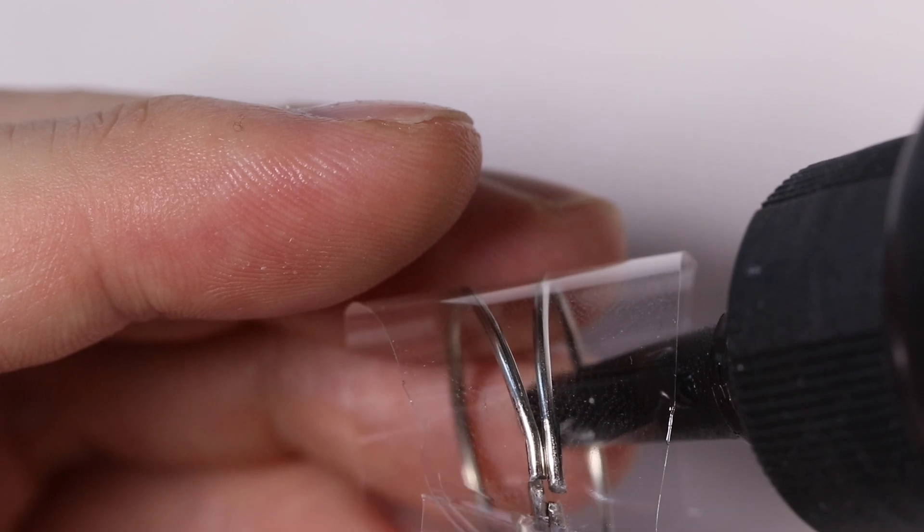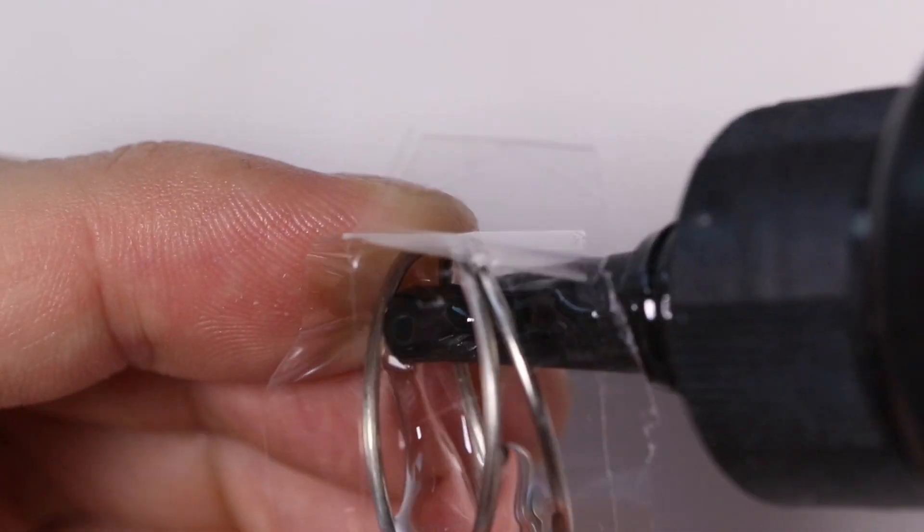So then for the next one I'm going to just do regular UV resin inside the rings and let that cure. And then take off the tape.